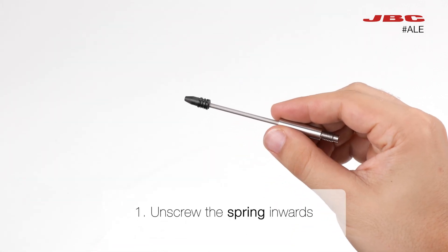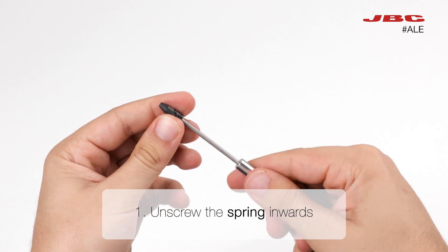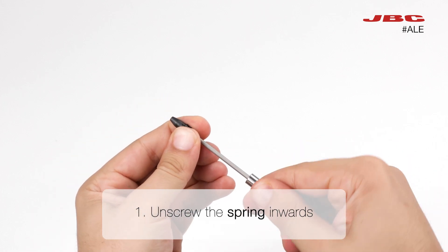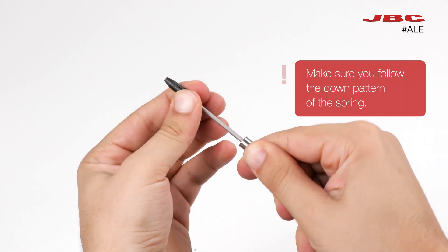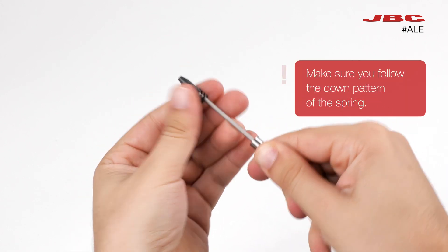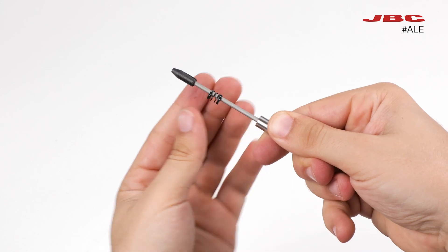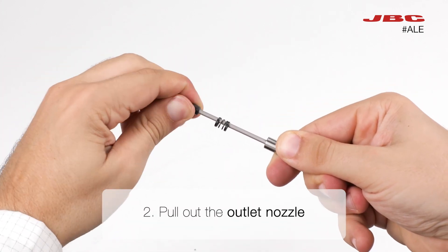The first step to change your outlet nozzle is to unscrew the spring inwards. You will get better results if you follow the down pattern of the spring. Now you can pull out the outlet nozzle.